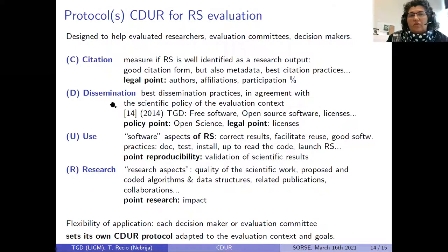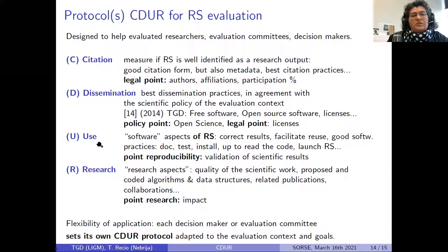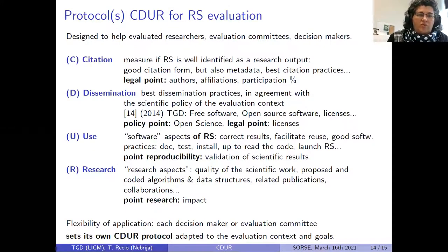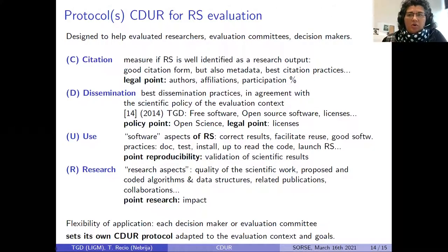The second step is dissemination, where we look at dissemination practices and whether they agree with the scientific policy of the evaluation context — for example, best open science practices. The policy point is open science and the legal point is licenses, because software can be disseminated under a free open source license. The two last steps are Use and Research. Use looks at software aspects and Research looks at the scientific research aspects. It was very important for us to separate these two roles.